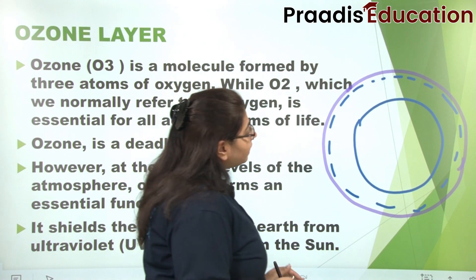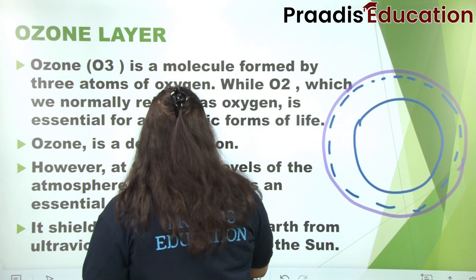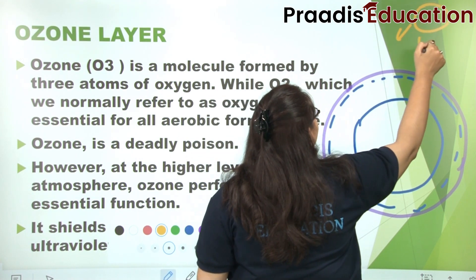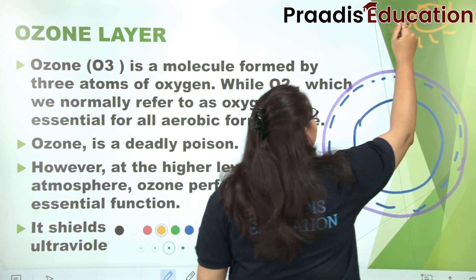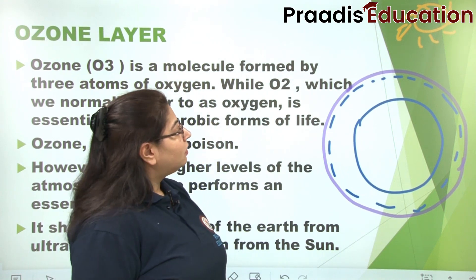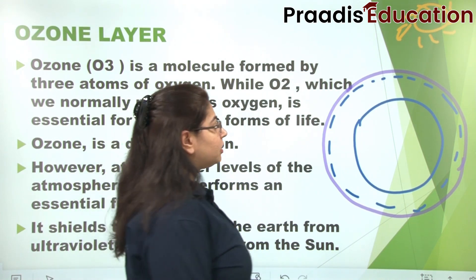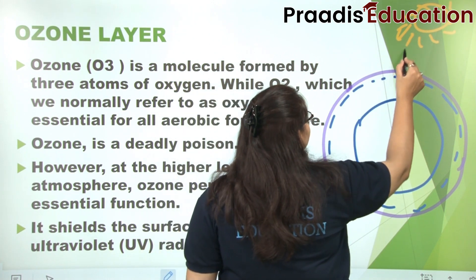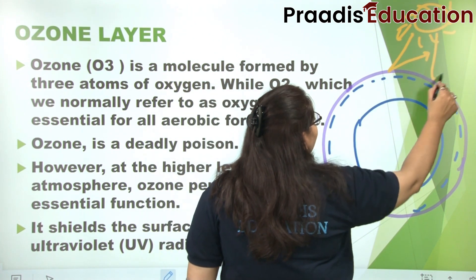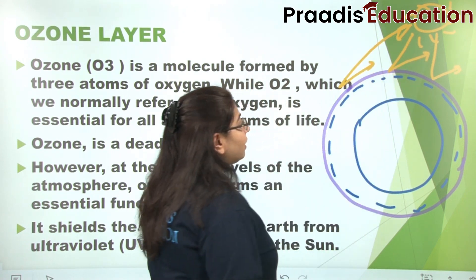This shield protects against harmful UV radiation. Now we know that there is sunlight, and there are various rays — some visible regions, some infrared regions, some UV or ultraviolet regions. These ultraviolet lights, when they come, do not enter through the ozone layer — they are reflected back.